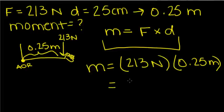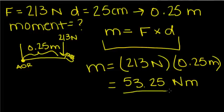So moment is equal to 213 newtons times the distance of 0.25 meters. When we multiply this out, we come up with 53.25 newton meters. This is the moment of the force acting on an axis of rotation from this far away.